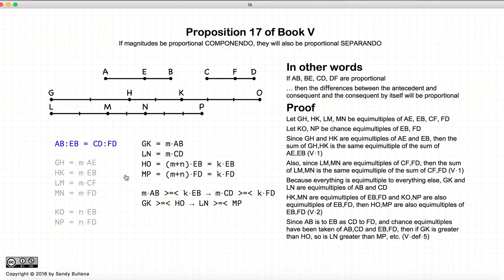Now according to the definition 5 of what it means for two ratios to be equal, if AB to EB is equal to CD to FD, the definition of what this means to be equal is written in this equation here, where we have if there's a multiple of AB greater than a different multiple of EB, that would imply that the same multiple of CD would also be greater than the other multiple of FD. So if m times AB is greater than k times EB, that implies that m times CD would also be greater than k times FD. If it's equal, they'd be equal. If it's less than, it's less than. Now remember, this is the definition of what it means for two ratios to be equal.